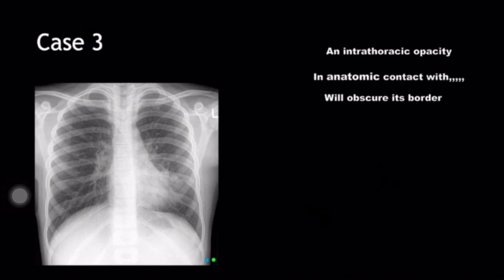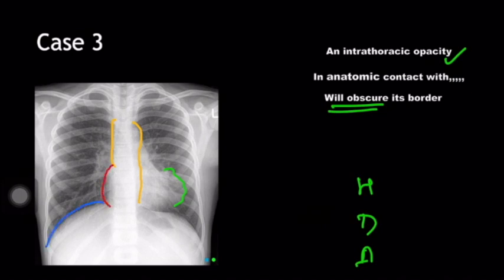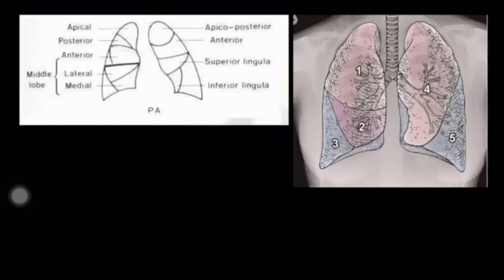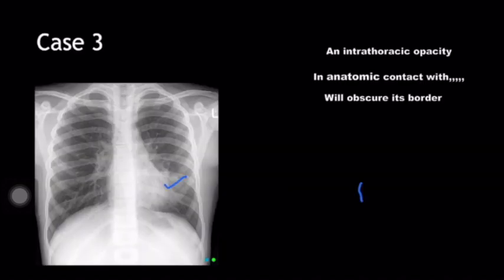Coming to case number 3 — there is an intrathoracic opacity. Let's see what it is obscuring: heart, diaphragm, or aorta? The aortic knuckle is visible, you can see the descending aortic line. The right hemidiaphragm is intact. The left hemidiaphragm is also intact. Now tracing the heart border — you can see it is not clear on the left side, so the lesion is obscuring the left heart border. Going back to the segmental anatomy, the lingular segment of the left lung is in anatomic contact with the left heart border. So we localize this opacity to the lingula.